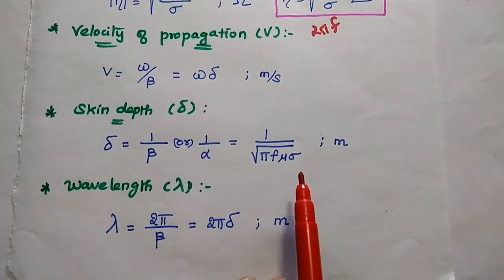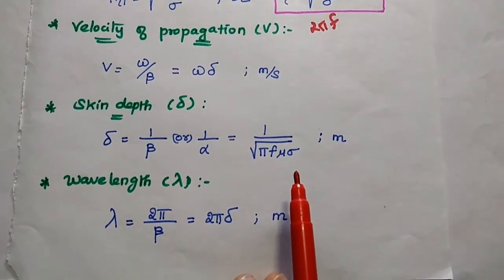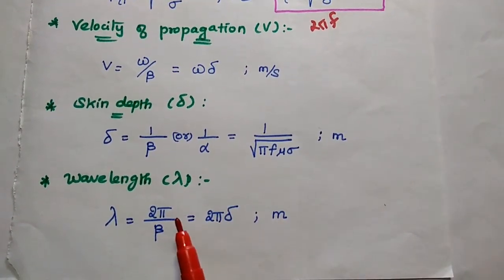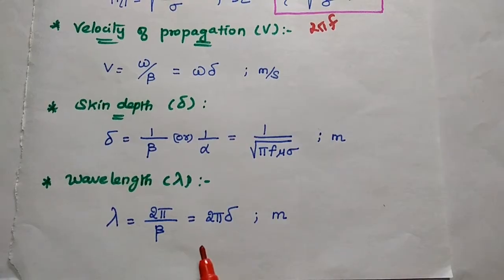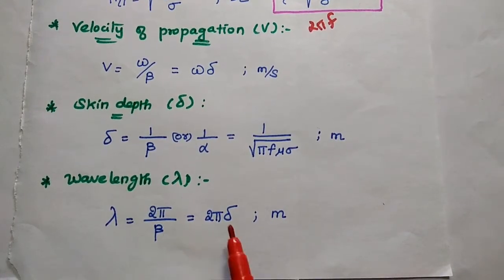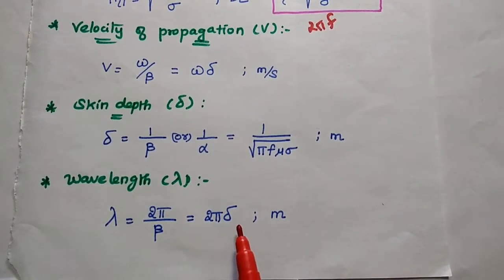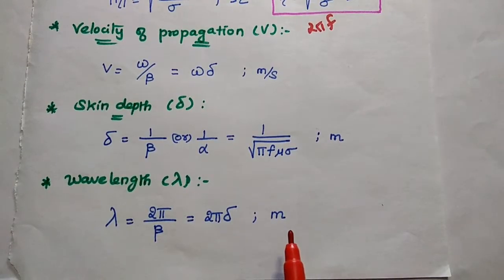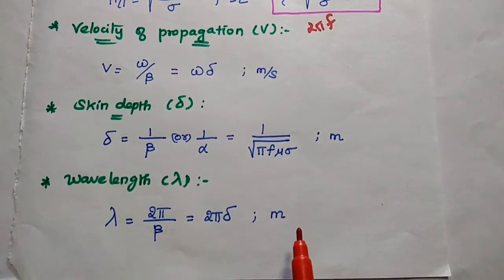The wavelength lambda equals 2 pi by beta, which can also be represented as 2 pi times delta, since 1 by beta is the skin depth delta. Its unit is meter.